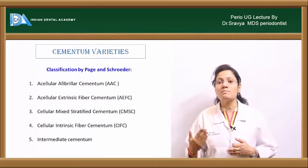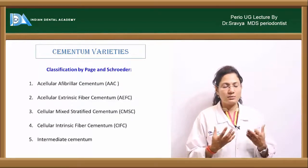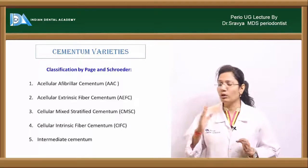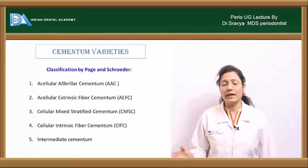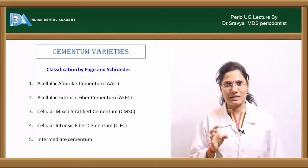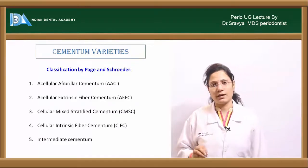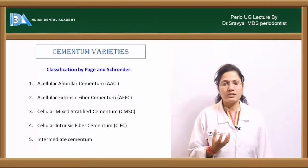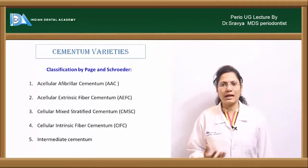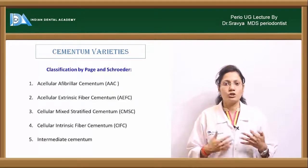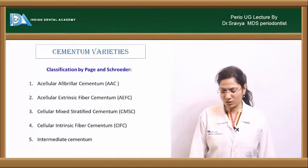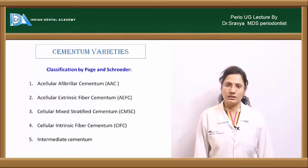The third type is cellular mixed stratified cementum — it has cells and a mixture of both intrinsic and extrinsic fibers. The fourth is cellular intrinsic fiber cementum — it has cells and intrinsic fibers but does not give attachment to Sharpey's fibers. The fifth is intermediate cementum.